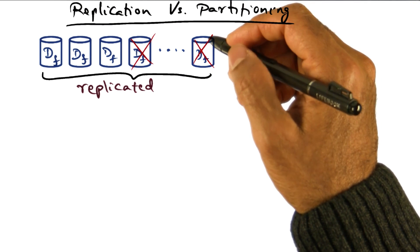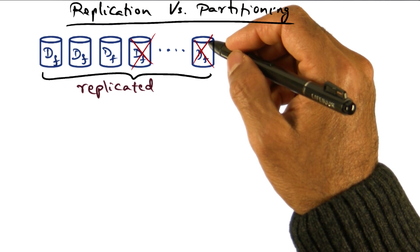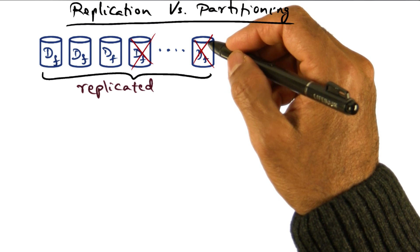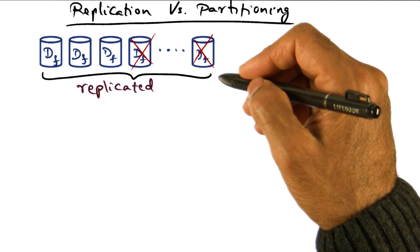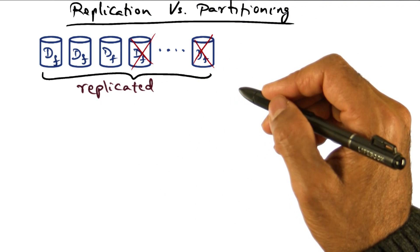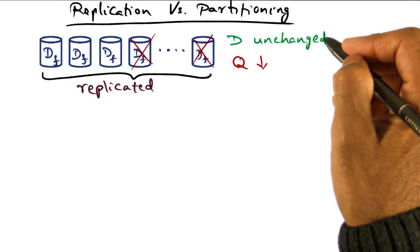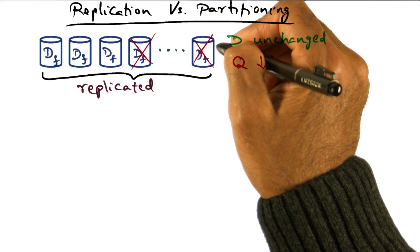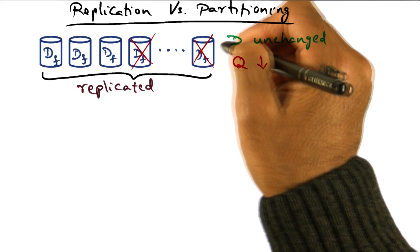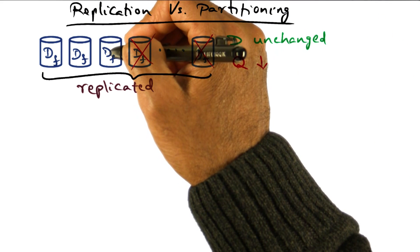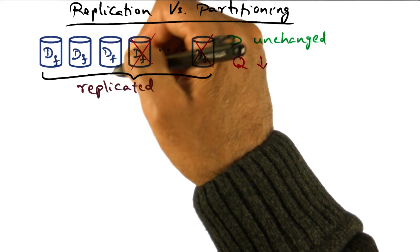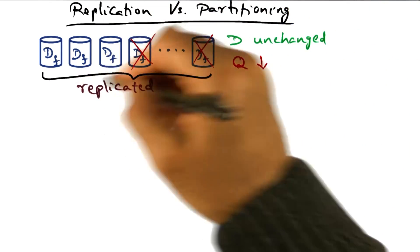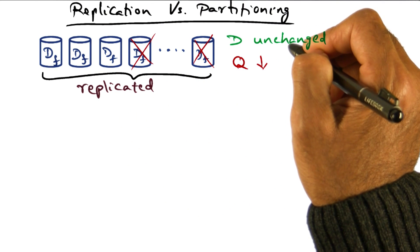We mentioned that failures are inevitable in giant scale services because of the number of computation elements that live within a data center. If failures occur with replicated data, the harvest is going to be unchanged because even if some data repositories fail, we can redirect a client request to another live server that has full access to the data repository. Therefore, the harvest you're going to get with replication is 100%, it is unaffected.